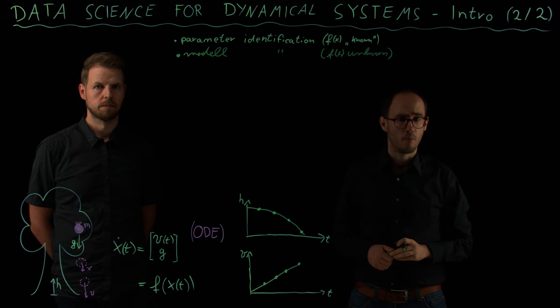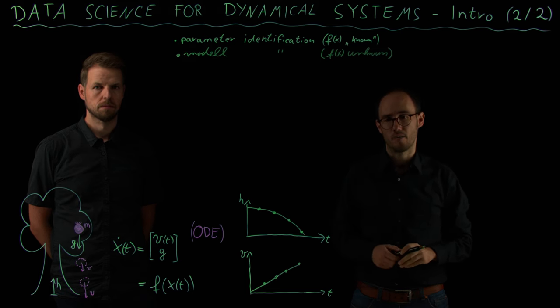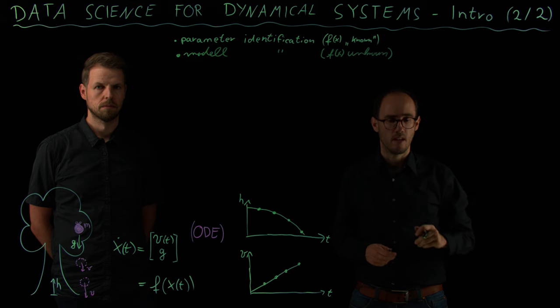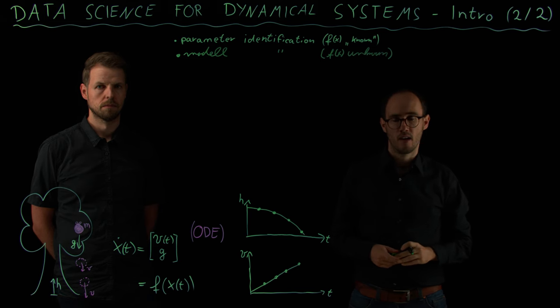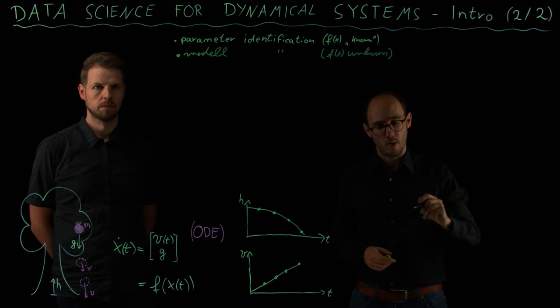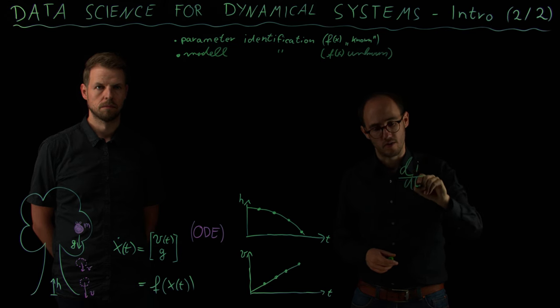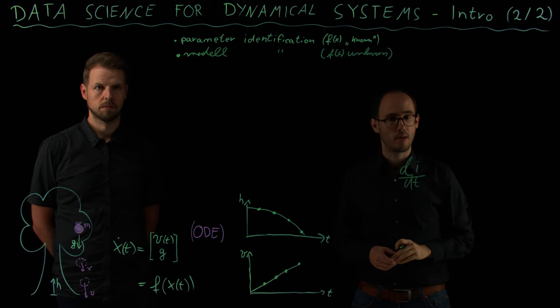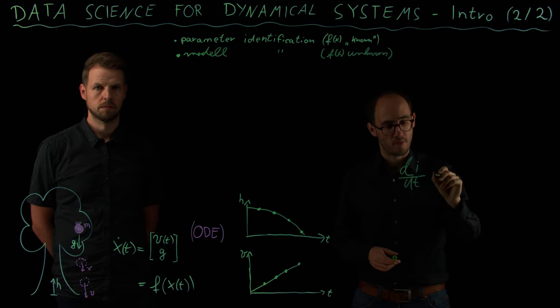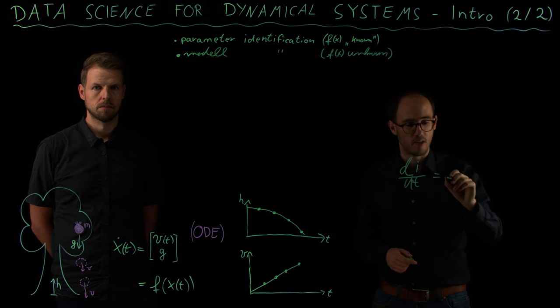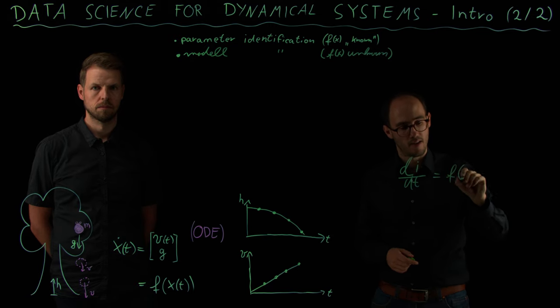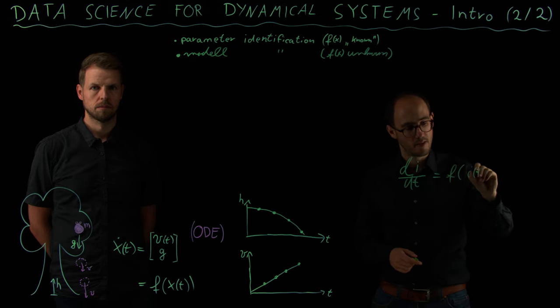In this previous Newton apple example, we have been able to describe the right hand side by first principle approach. But let's consider a more abstract example where this is not so easily possible. Let's take an example from national economy, where I want to model the change of the interest rate over time.